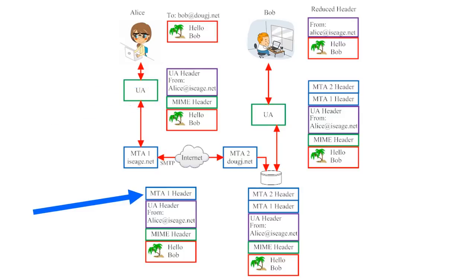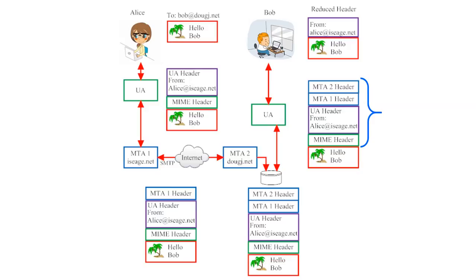When the message goes to the first Message Transfer Agent, that MTA leaves a header of its own so there's a record of where the email has been. All subsequent MTAs will leave headers of their own as well. In this illustration, there are only two MTAs, so the email only picks up two MTA headers. The email arrives at Bob's user agent with all of these headers attached. In many cases, the headers will end up being much longer than the email message itself. To reduce clutter, most modern user agents won't display all of these headers by default. Bob can only see the message and a reduced header that tells him who sent it.